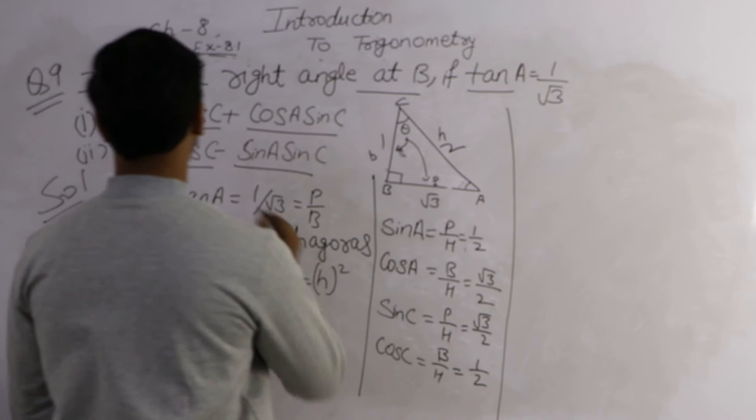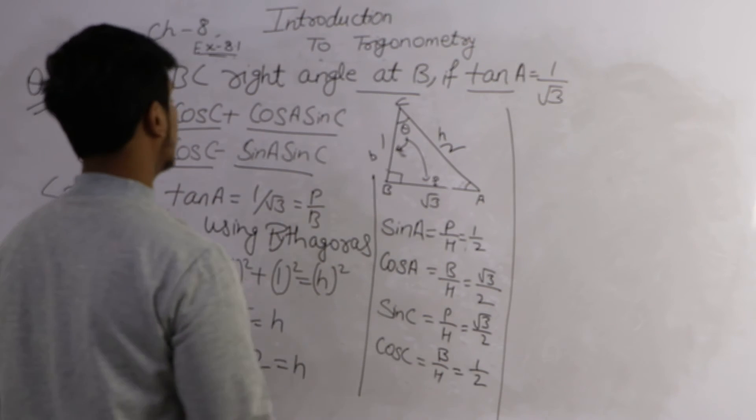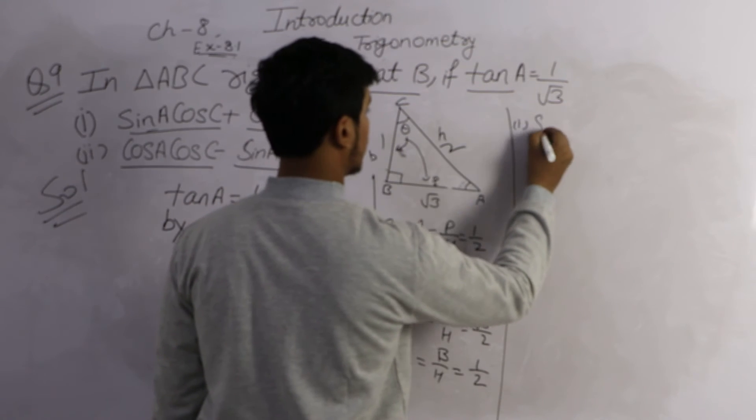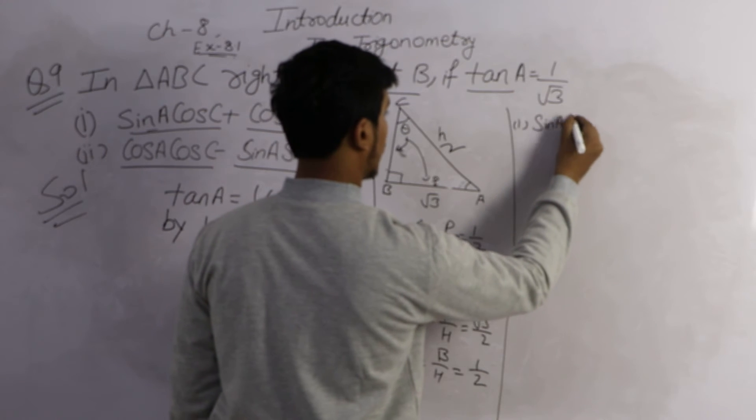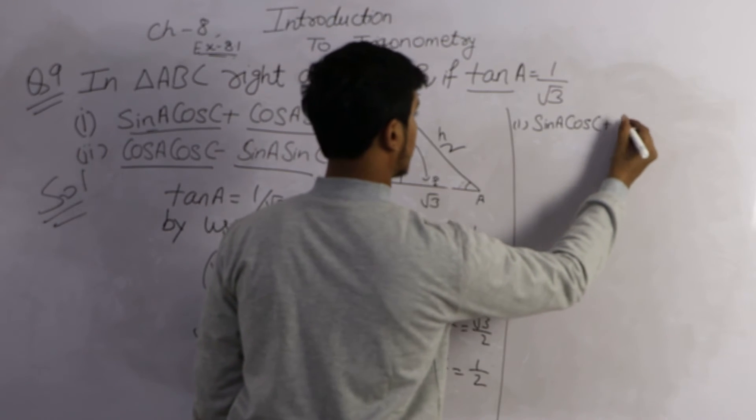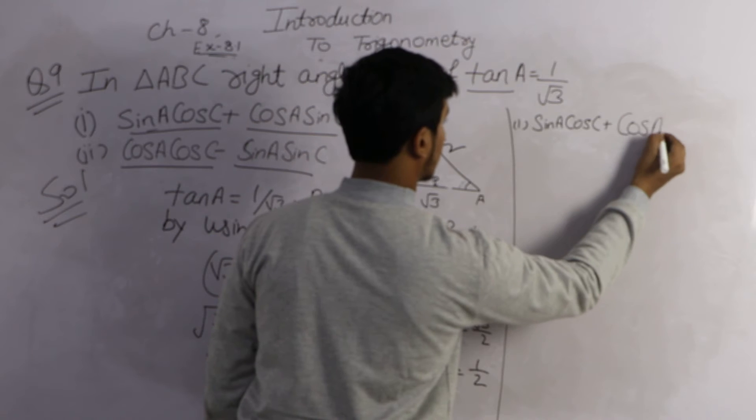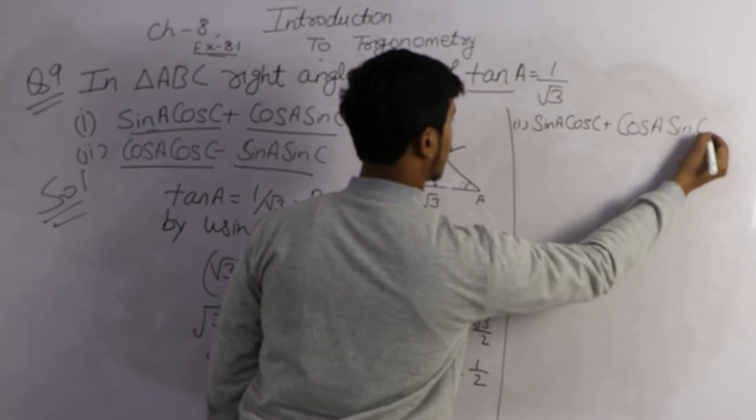We have to calculate first part sin A cos C. Sin A cos C plus cos A sin C.